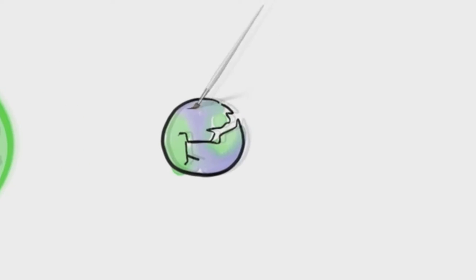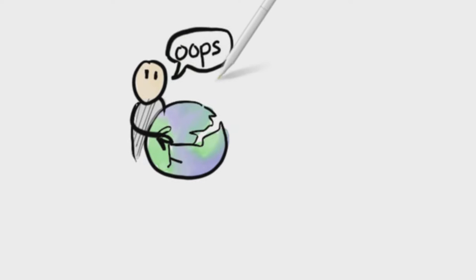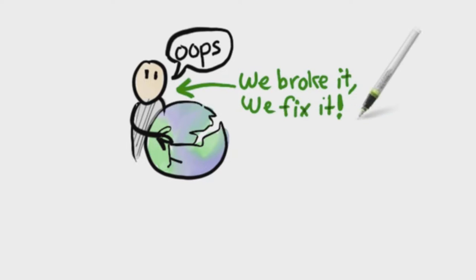So here's the situation: the climate is kind of broken and we're in trouble because we're stuck on this one planet, so our lives depend on it. The good news is that scientists have figured out the cause of the problem—us. We humans broke it, but because it proves that we humans are powerful enough to actually impact Earth's climate, which means we can fix it.